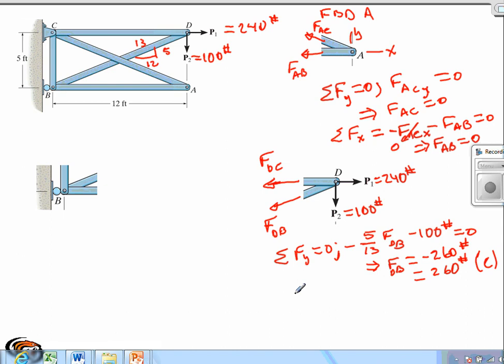Next, we sum forces along the X. And that we're going to have negative FDC. We'll have the horizontal component of BD. And that's going to be 12 over 13 FDB. And we'll have the 240 pound force as well.